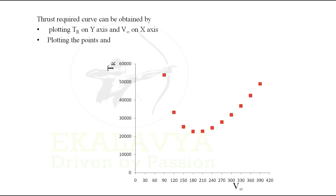The thrust required curve can be obtained by plotting TR on y-axis and velocity on x-axis. Plotting the points, that is the thrust required corresponding to the respective velocities, and joining them using a curve, we will be getting our thrust required curve. The thrust required curve can be used to find out the minimum thrust required through this graphical approach.